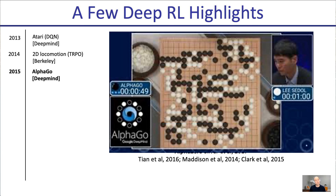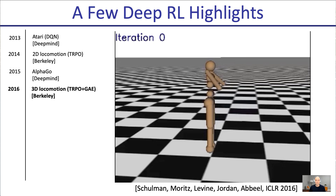Another big result, in 2015 out of DeepMind, was AlphaGo, showing that with the help of reinforcement learning it was possible for a computer to beat the best human player — the human world champion at Go. Many people thought it would be many years before that would happen. Reinforcement learning was at the core of this.